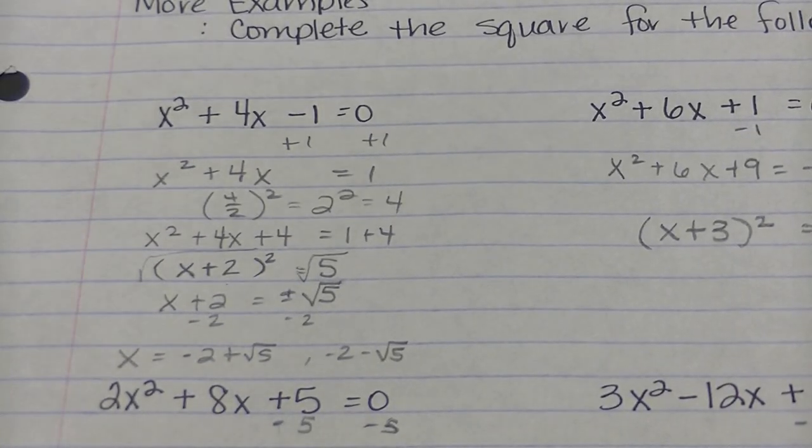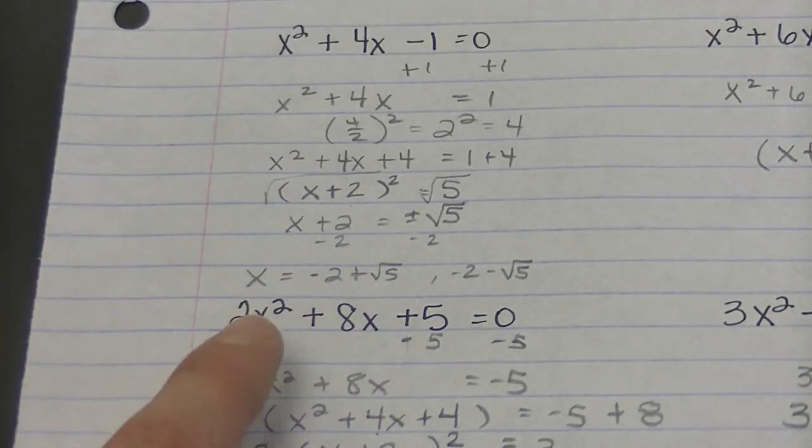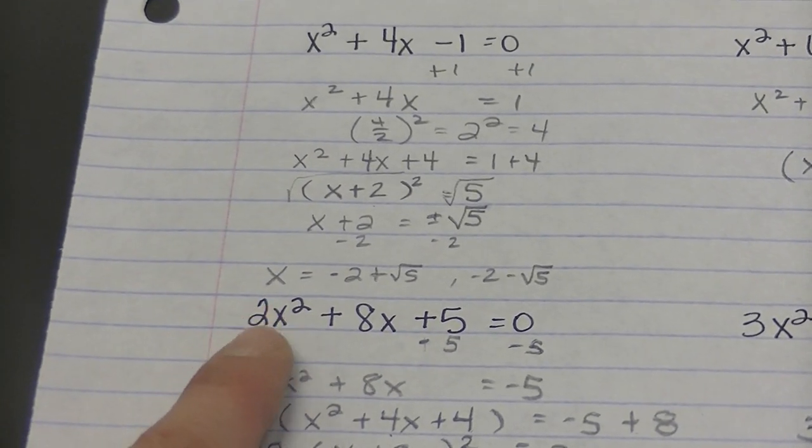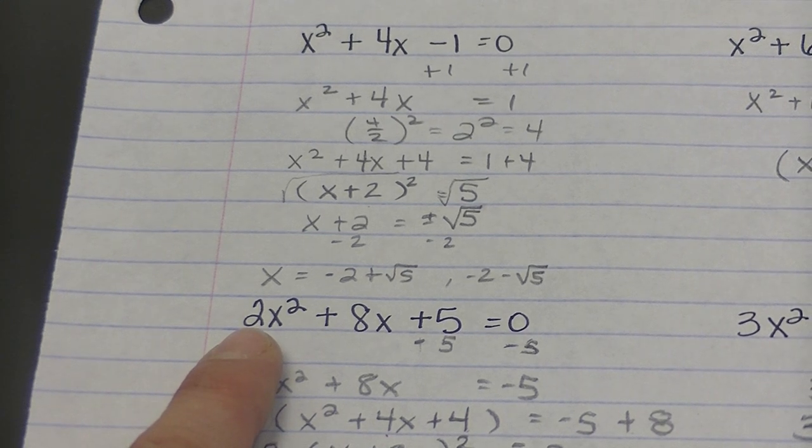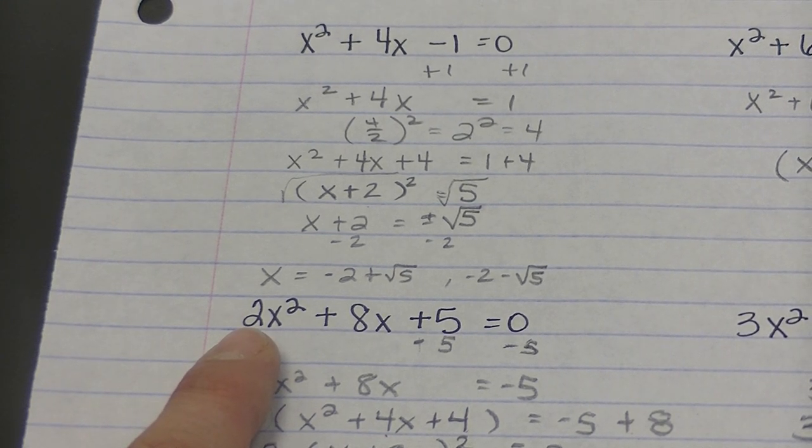So that works all well and good except there's a little wrench thrown in the system if we've got a 2 right here or a 3 or a 4 or any other number in front of your x squared.